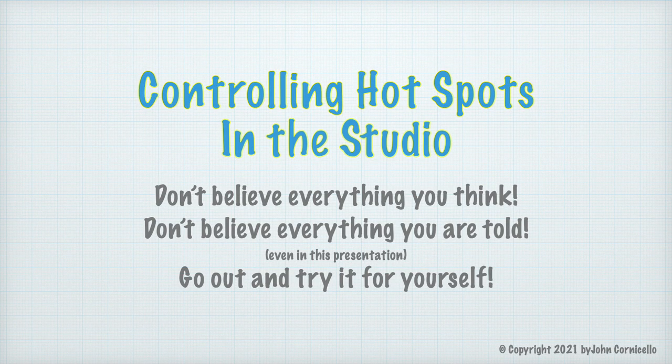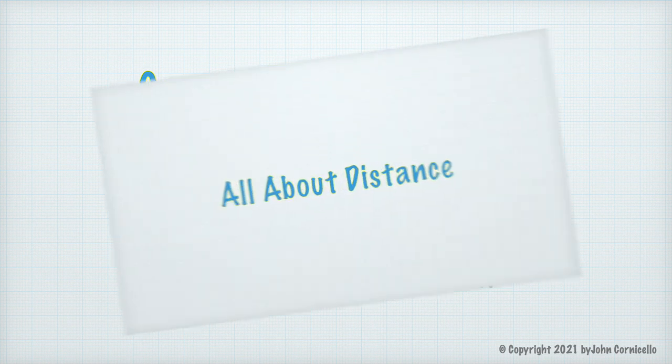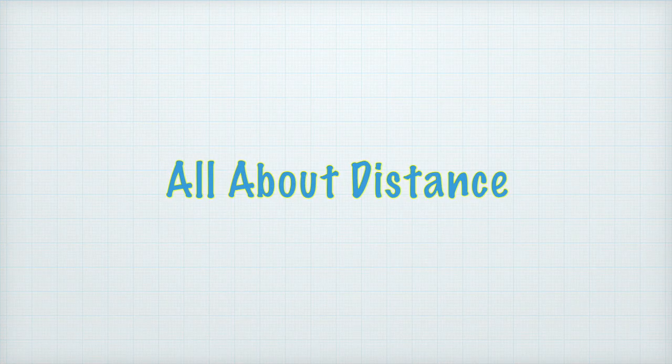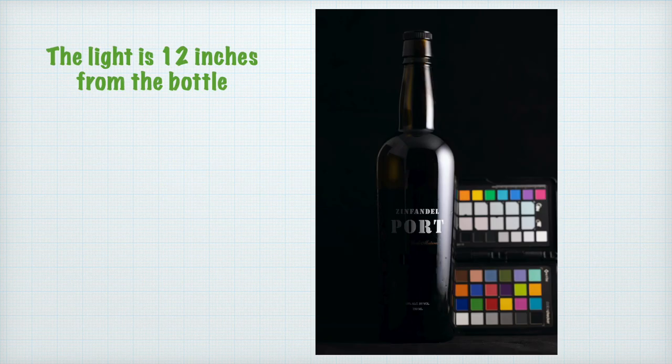I recently posted a video about misconceptions in lighting. One of the topics covered was about controlling hot spots by changing the distance between the light and the subject. I have received a few questions about that, so I want to go into more detail. I am going to start with a product still life photo of a wine bottle that I used in the misconceptions video. There is a link to that video in the description.